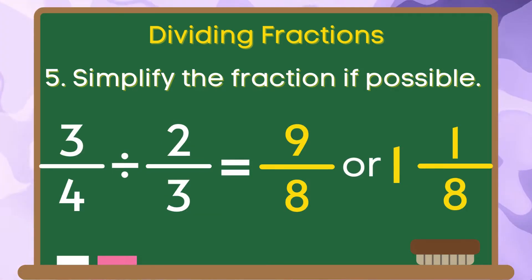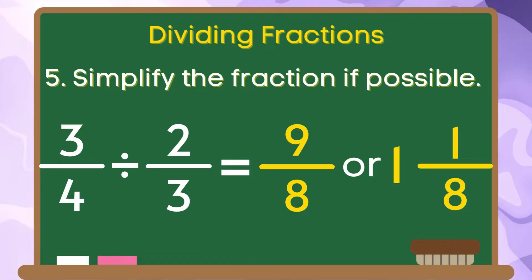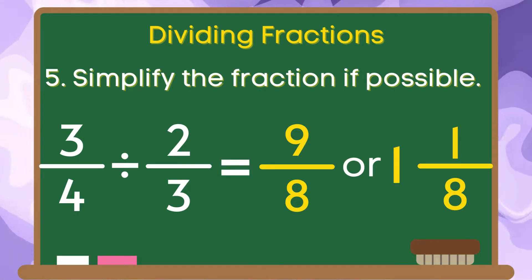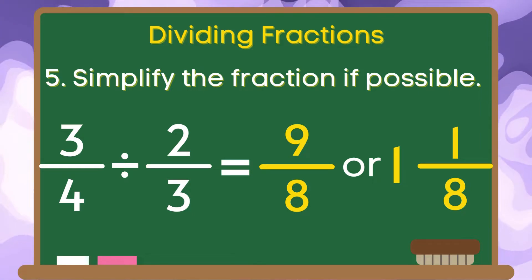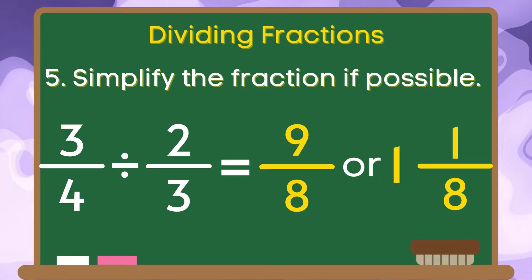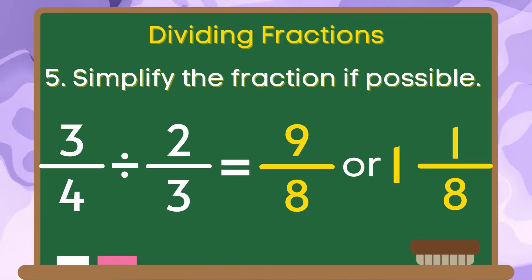Therefore, if we divide 3 fourths by 2 thirds, the quotient is 9 eighths or 1 and 1 eighth.